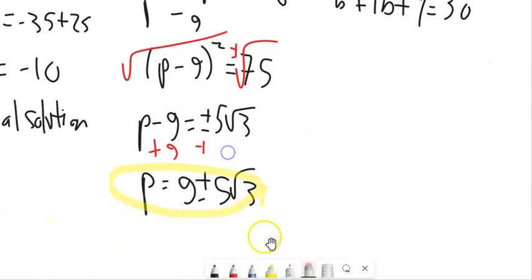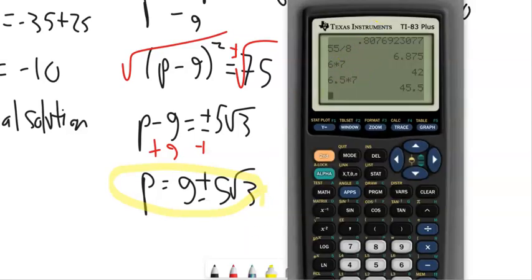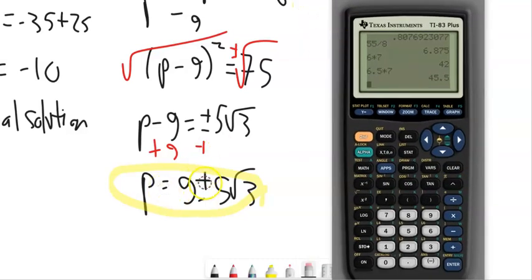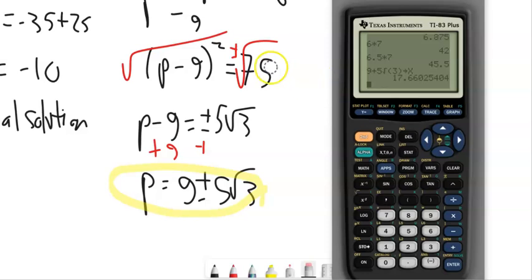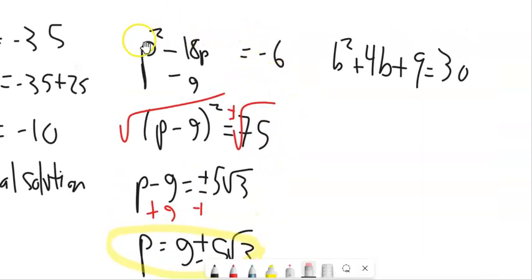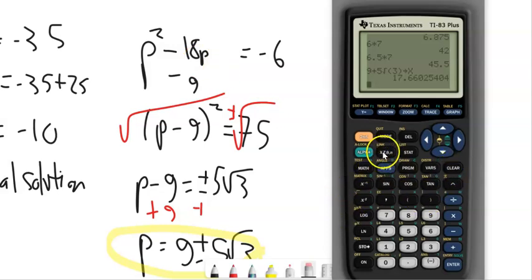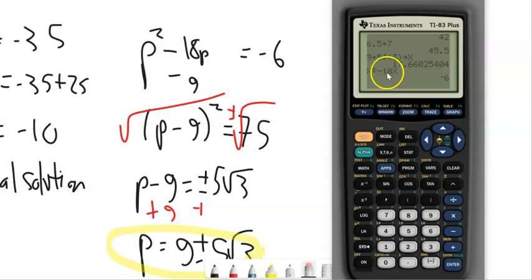What's great is I can check my answer on a calculator. I'll take the positive case: 9 + 5√3, store that in x. Then I plug it back into the original equation — x² - 18x — and it should output -6. If one answer works, the other will too, but you can verify both if unsure.